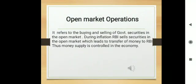Open market operations or OMO. It refers to the buying and selling of government securities in the open market. During the period of inflation, RBI issues government securities to commercial banks for which they have to pay to RBI resulting in the limitation of funds and they cannot lend further. Thus money supply is controlled in the economy.